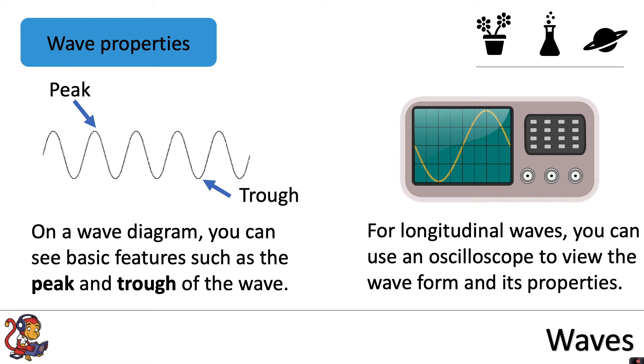So for example if you had a sound wave you could use an oscilloscope and that will allow you to view that sound wave as if it were transverse. So you can see the basic properties of the wave.